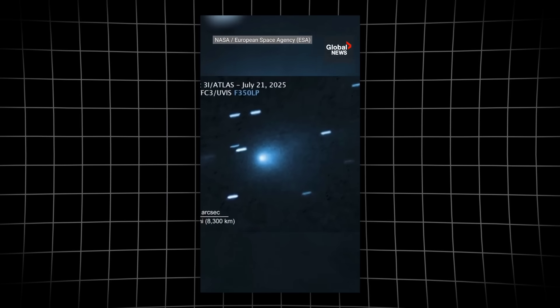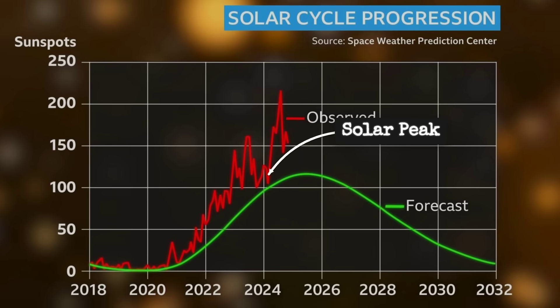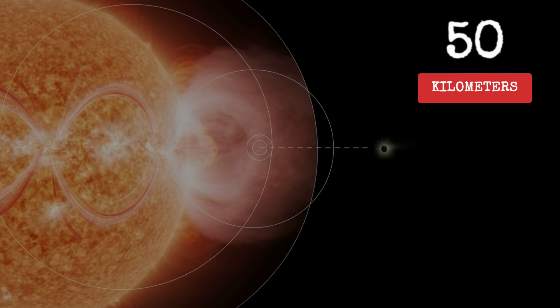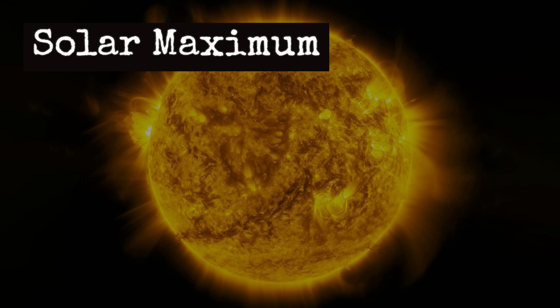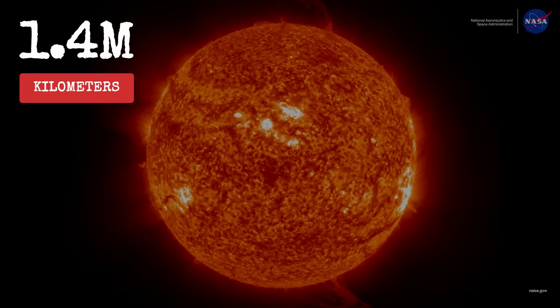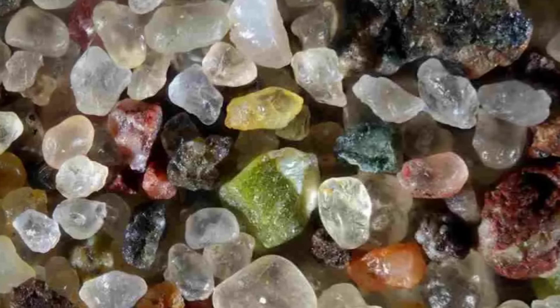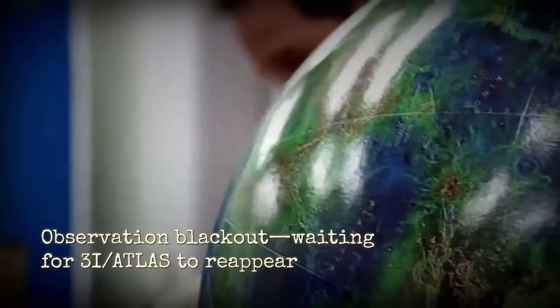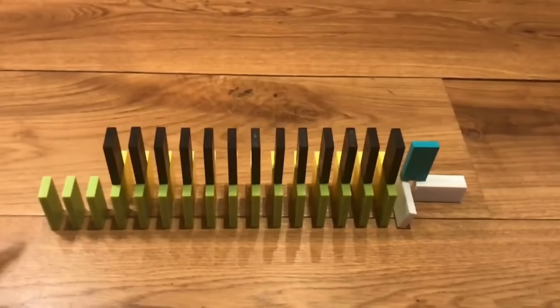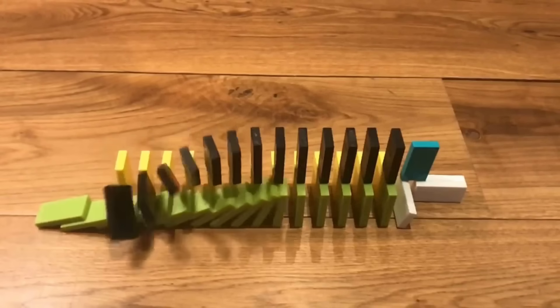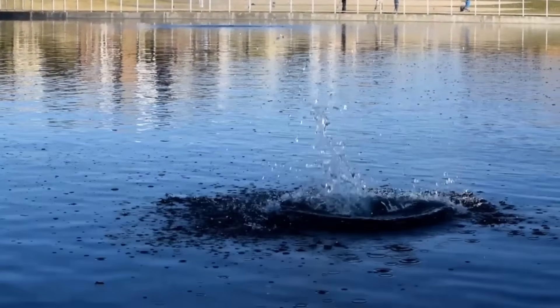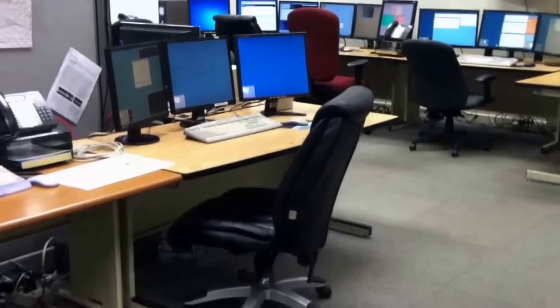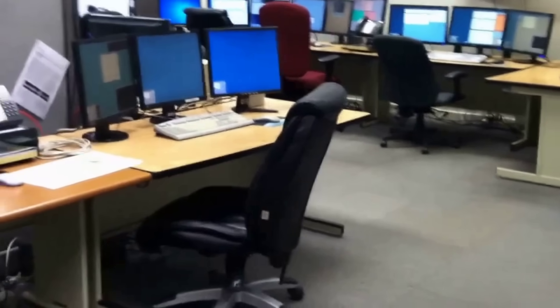There's also speculation about whether interstellar objects like 3I/Atlas could affect solar activity. The mainstream view is that an object this small, even 50 kilometers across, is far too tiny to influence the sun in any measurable way. The sun is 1.4 million kilometers in diameter. 3I/Atlas is like a grain of sand compared to a beach ball. However, some researchers propose that in a highly interconnected electromagnetic system, even small perturbations could have cascading effects. It's similar to how a small pebble can trigger an avalanche if conditions are right. We simply don't have enough data to say definitively either way.